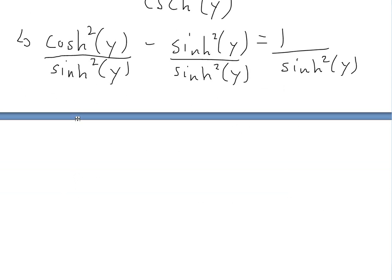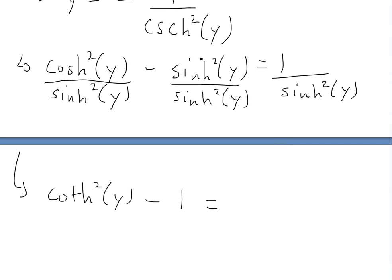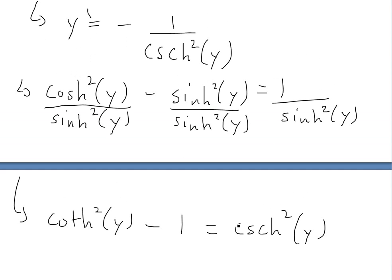When we divide through, the left side becomes hyperbolic cotangent squared of y, since that's cosine over sine. The middle term, sine squared over sine squared, equals 1. And the right side gives us the definition of hyperbolic cosecant squared of y. So by this identity: coth²(y) − 1 = csch²(y).